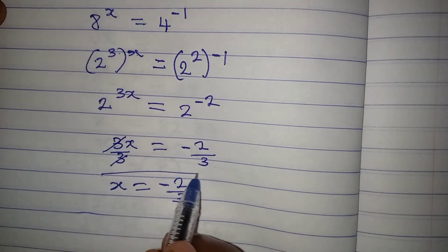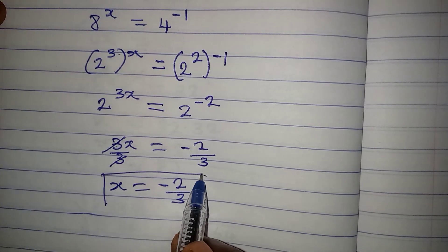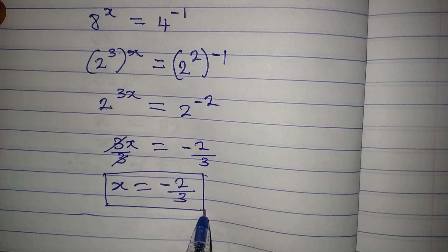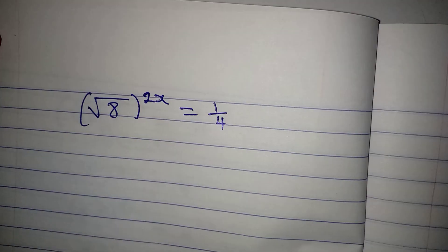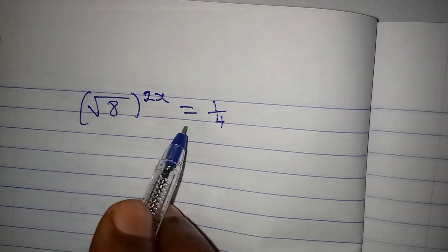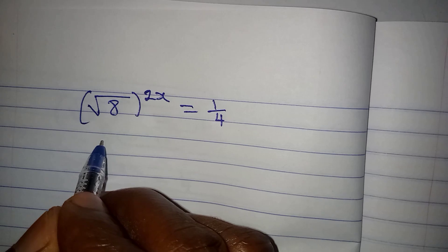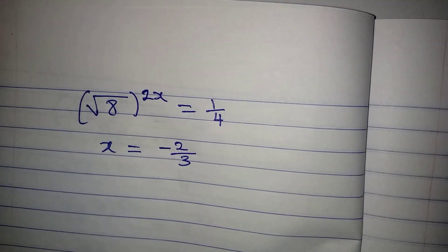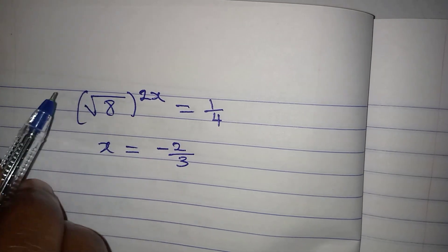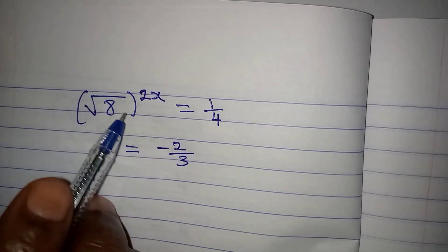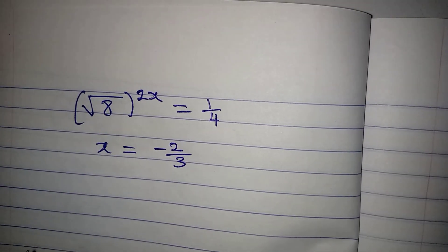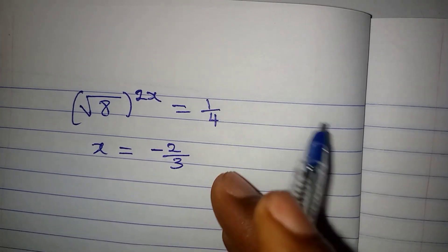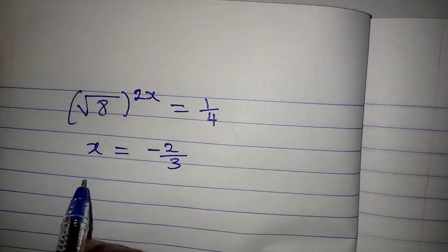So if you are doubting whether this will be right or wrong, stay with me as we try to check our answer. This is the original equation, and our x is equal to minus 2 over 3. So my target now is the left-hand side. I want to input this value into the left-hand side. And we are going to have 1 over 4.